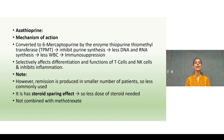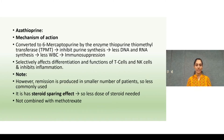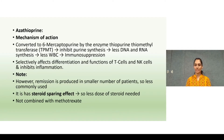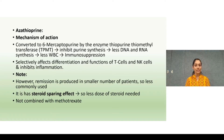Next drug is azathioprine. The mechanism of action is that azathioprine is converted into 6-mercaptopurine by the enzyme thiopurine methyltransferase (TPMT), which inhibits purine synthesis, causing less DNA and RNA synthesis, less WBC production, and immunosuppression. It selectively affects differentiation and functions of T cells and natural killer cells. Remission is produced in a smaller number of patients so it is less commonly used. It has a steroid-sparing effect and is not combined with methotrexate.